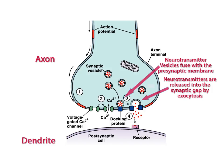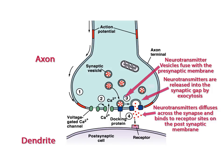The neurotransmitter then diffuses across the synapse and binds to receptor sites on the postsynaptic membrane. If enough neurotransmitter is present, the action potential will continue on to the next neuron.